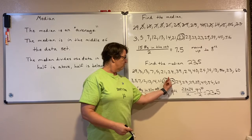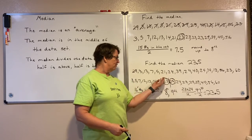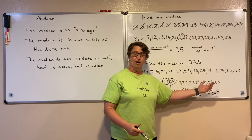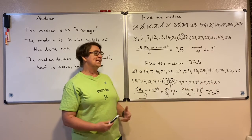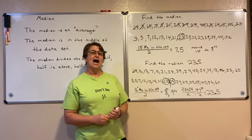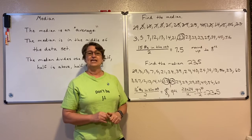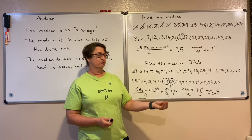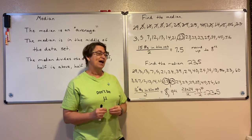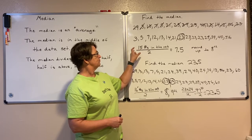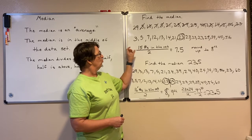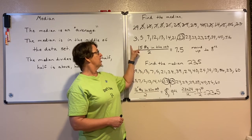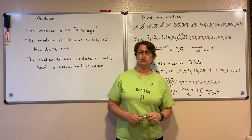So that number — half of your data is below it and half of your data is above it. Your median divides your data set in half so that 50% is below and 50% is above. We can find that median first by figuring out which position to look for by dividing the count of numbers in our data set by 2.